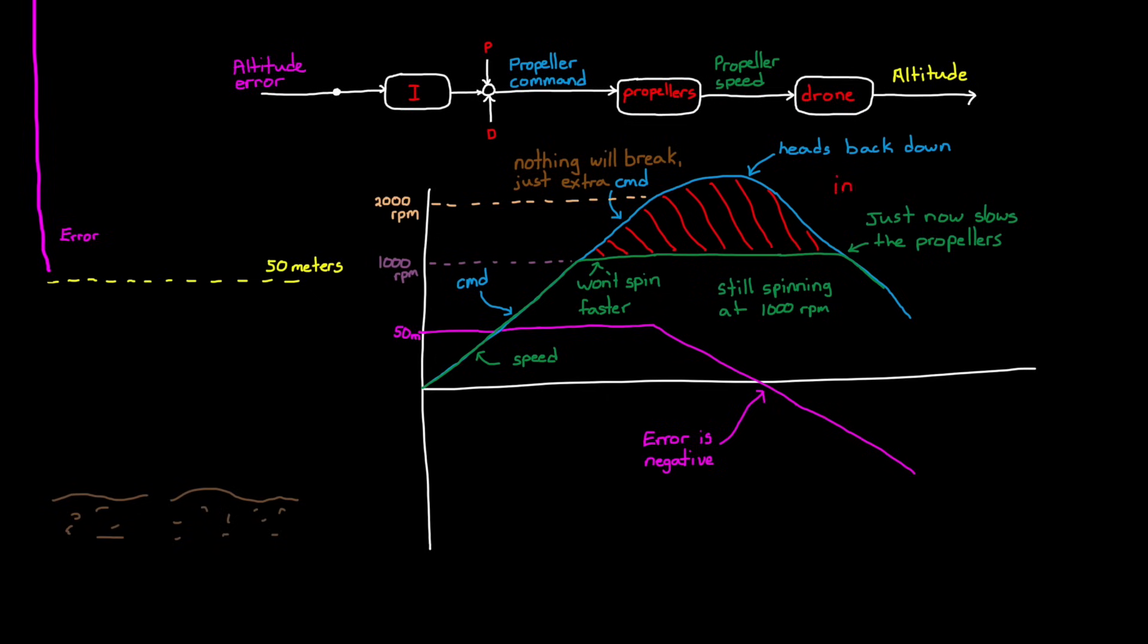This is called integral windup, and it's something we need to protect against in our PID controller, because you never know if you're going to get into a situation where an actuator saturates. And when something does saturate, we want to minimize the time it takes to reverse the command when the error changes signs. So we need to implement some kind of anti-windup method.